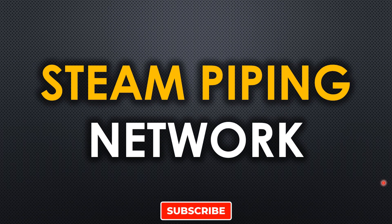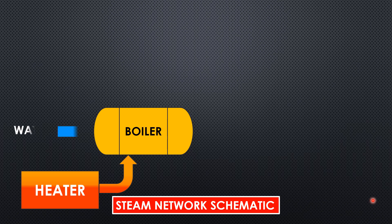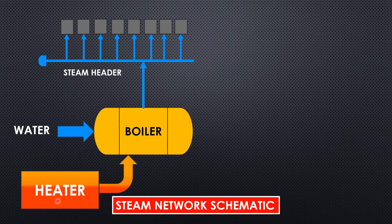Let's understand how steam piping works — the steam network. I'm going to show you the steam network schematic. Generally you will find a heater and a boiler. The boiler will have a feed of water from any water source, and through the heat produced from the heater, the boiler will generate steam. The steam will go to the steam header, and from there distributions will go to the respective equipment.